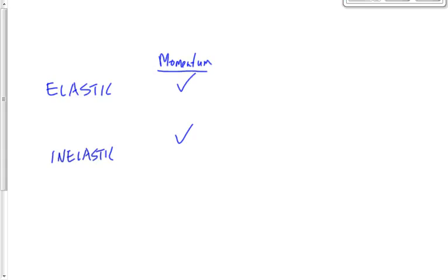That is, if it's an isolated system, if you don't have any external forces. Kinetic energy, on the other hand, isn't always conserved. Which type of collision is kinetic energy conserved in? Elastic or inelastic? Elastic. Good. So we're going to put a little check mark by elastic under kinetic energy.